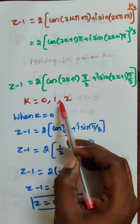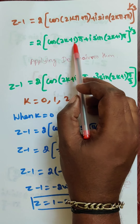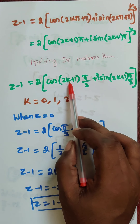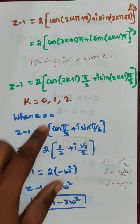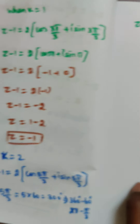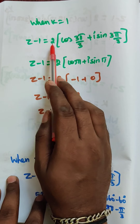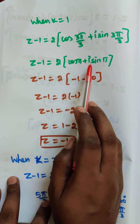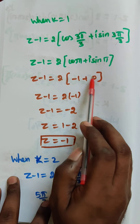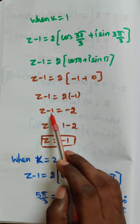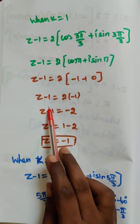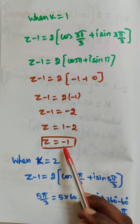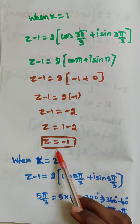Next, substituting k equal to 1: 2 into 1 plus 1 gives 3, so we get cos 3 pi by 3 plus i sin 3 pi by 3. The 3s cancel, giving 2 into cos pi plus i sin pi. We know cos pi equals minus 1 and sin pi equals 0, so z minus 1 equals 2 into minus 1 equals minus 2. Therefore z equals 1 minus 2, which gives z equal to minus 1. This is another root.